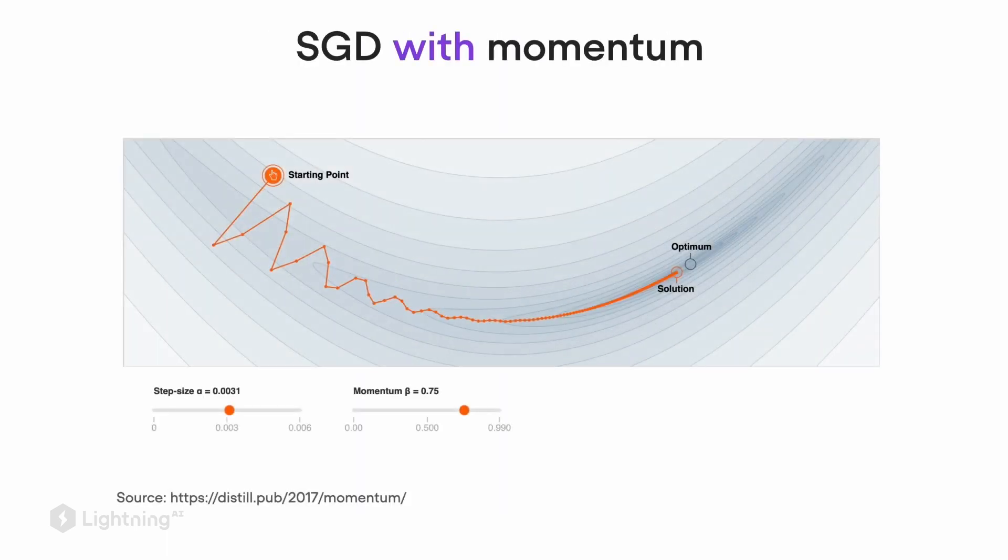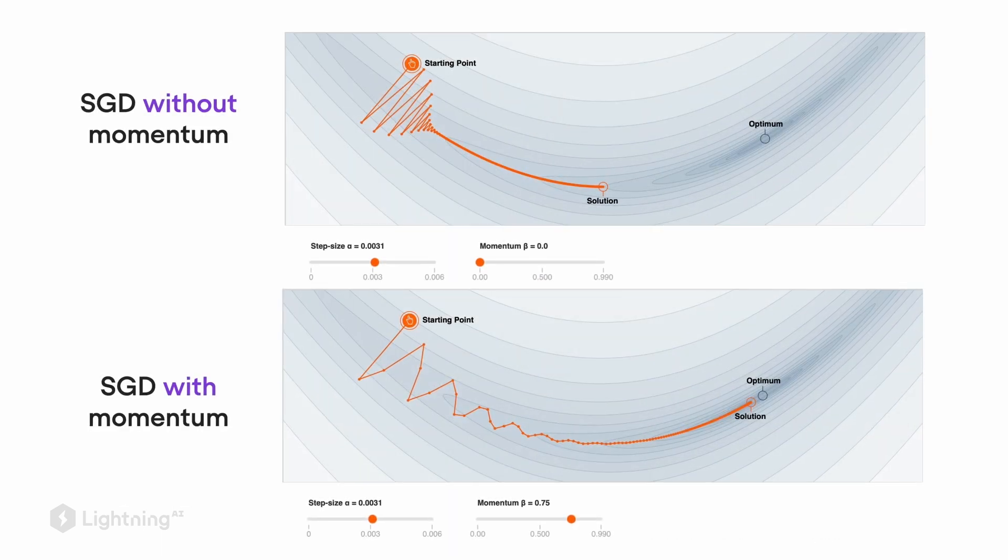Now here, if we add a momentum term, we can see that we kind of dampen these oscillations. There are fewer of these high frequency oscillations and the path is more stretched out. In this case, the algorithm also reaches the optimal point here.